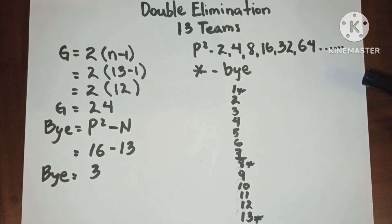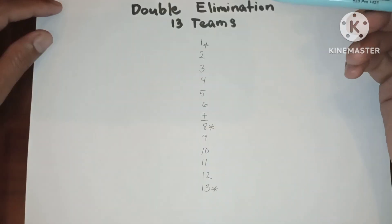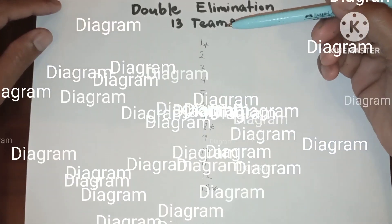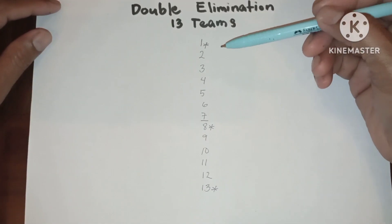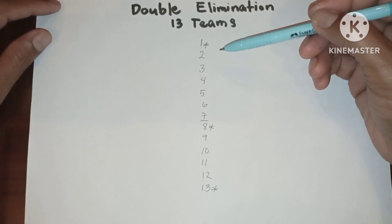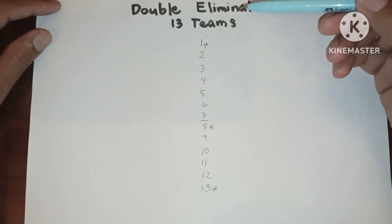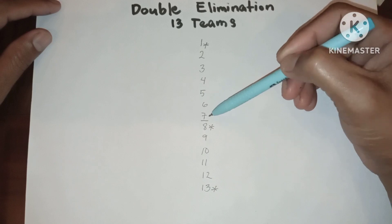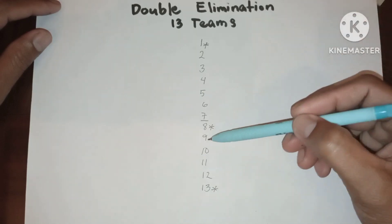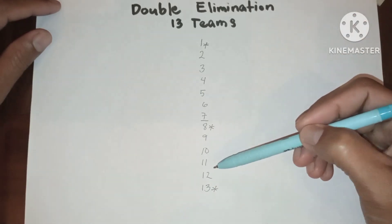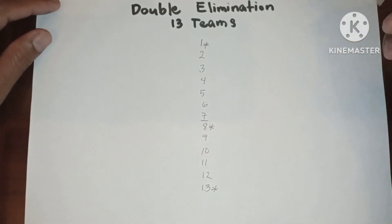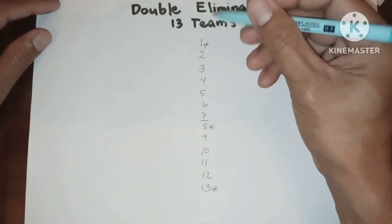Now let's proceed to the diagram. Since we have three byes, we have 10 competing teams in the first round: 1, 2, 3, 4, 5, 6, 7, 8, 9, and 10. Now let's proceed to the first round.